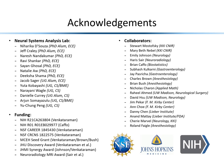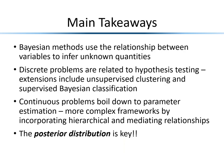Before wrapping up, I'd like to thank my fantastic lab, our collaborators, and our funding sources. The main takeaways from this course are that Bayesian methods use relationships between random variables to infer unknown quantities based on observed data. Discrete problems relate to hypothesis testing, with extensions including clustering and Bayesian classification methods. Continuous problems boil down to parameter estimation, and more complicated models can be developed by incorporating hierarchical information. If there's one takeaway, it's the posterior distribution — the probability of unknown quantities given observed quantities — which is the key for all subsequent inference. Thank you.